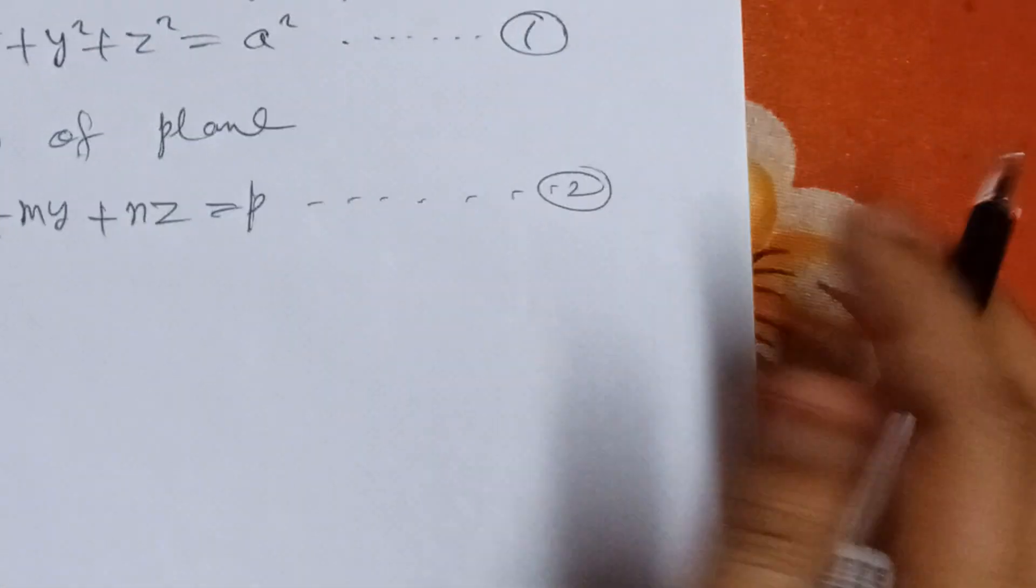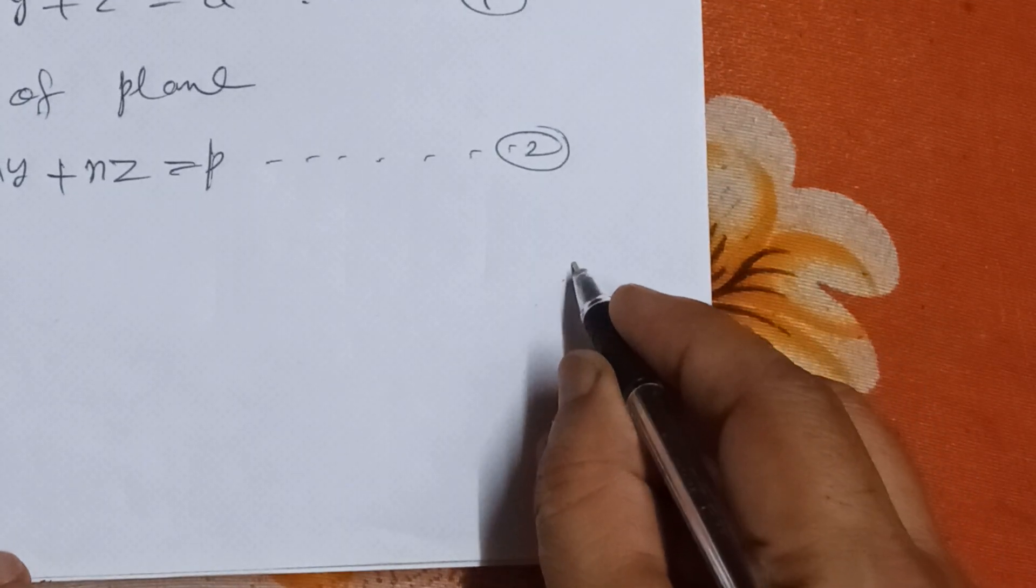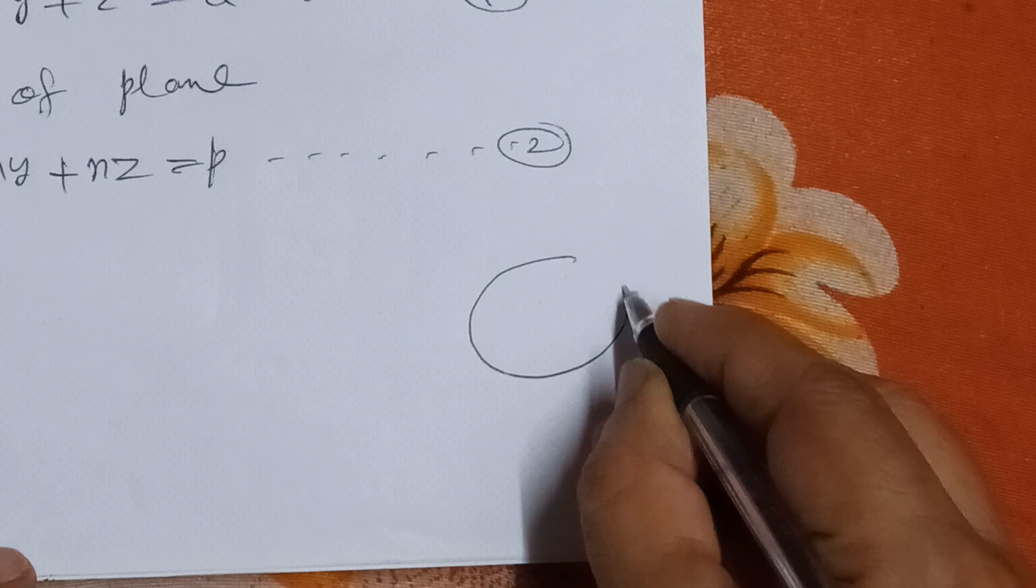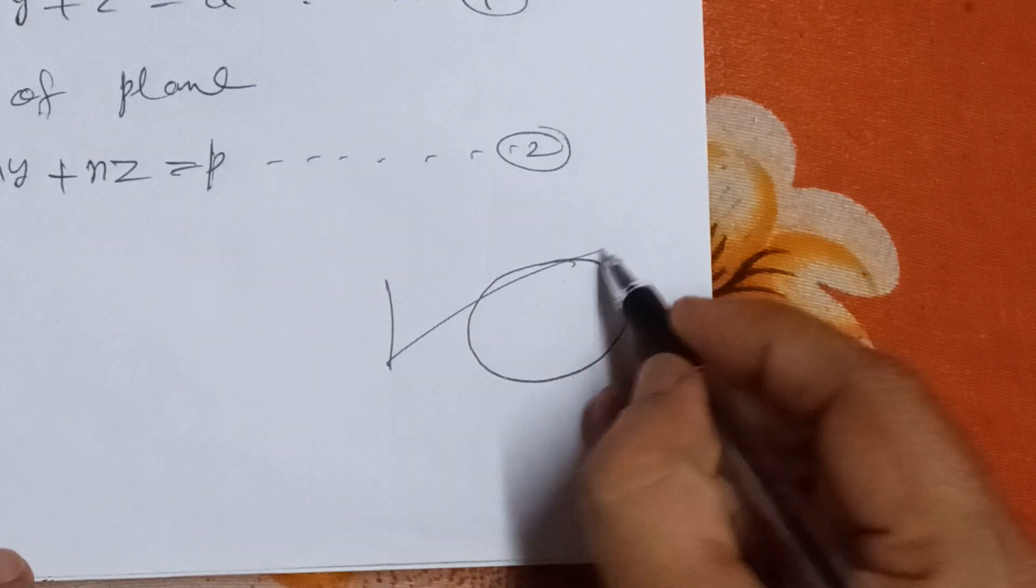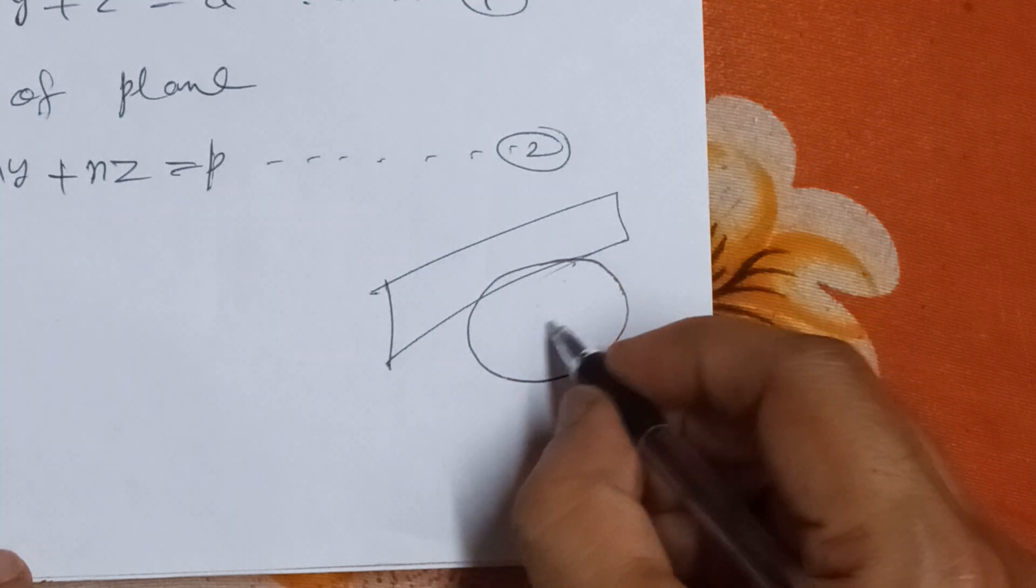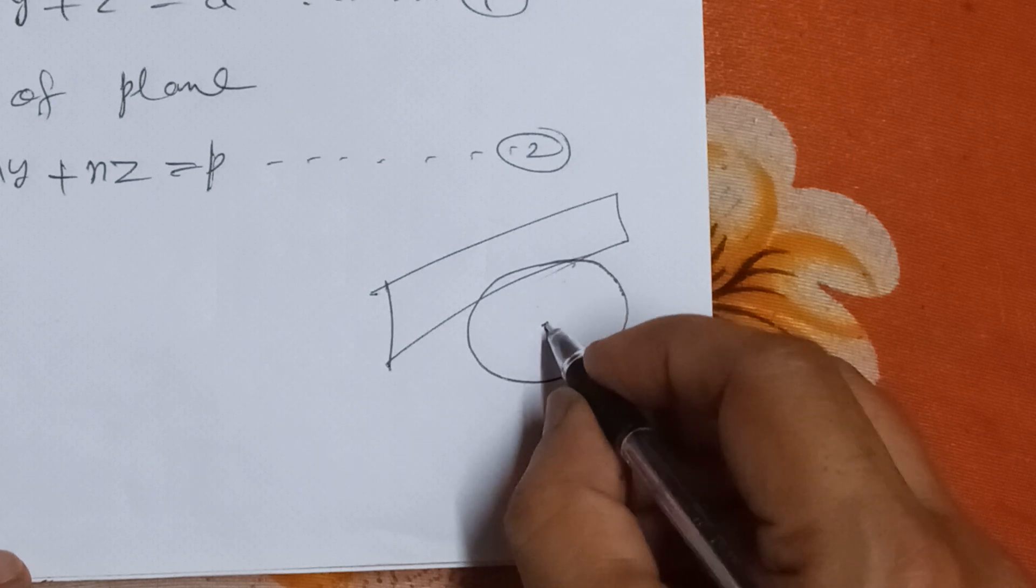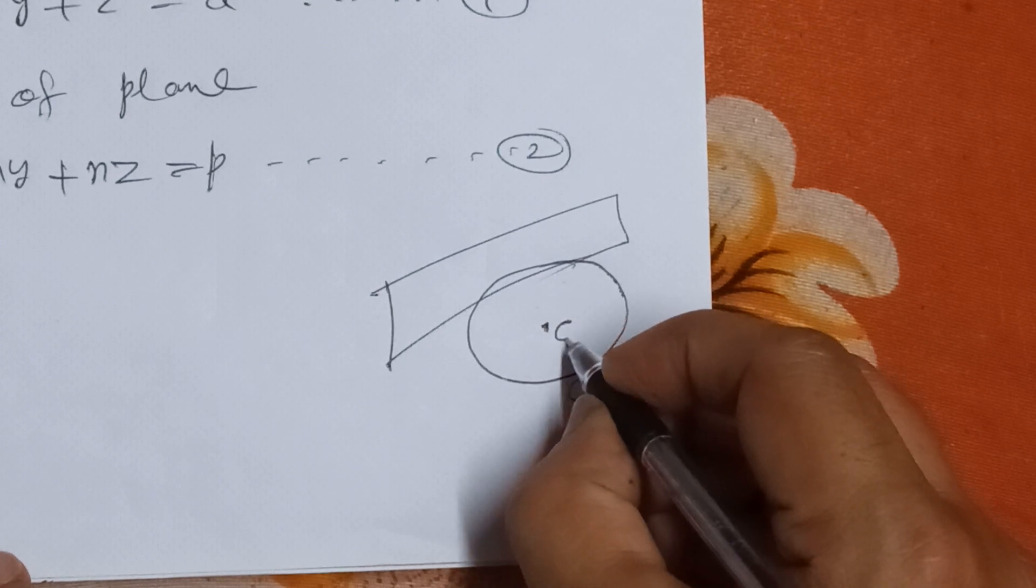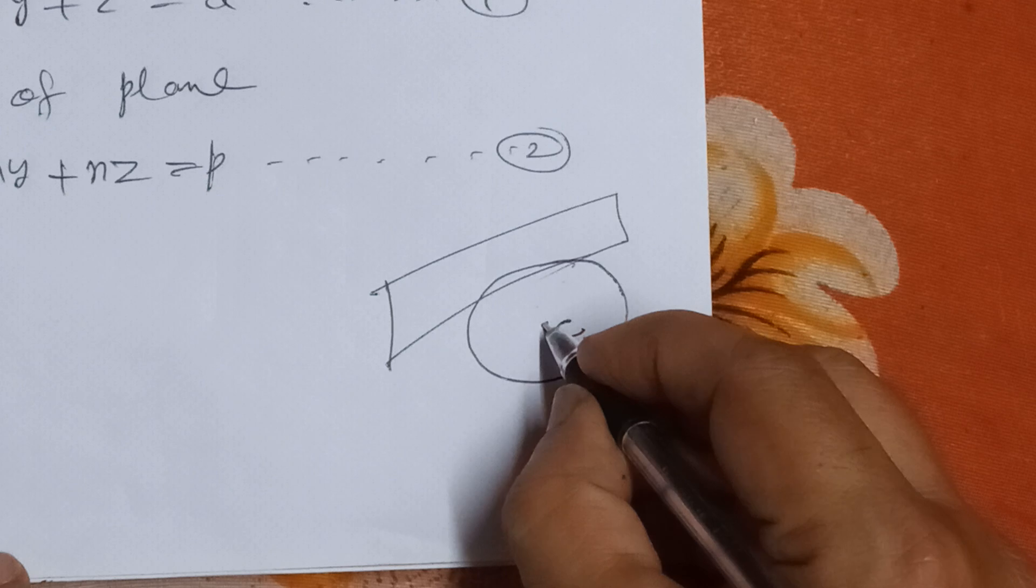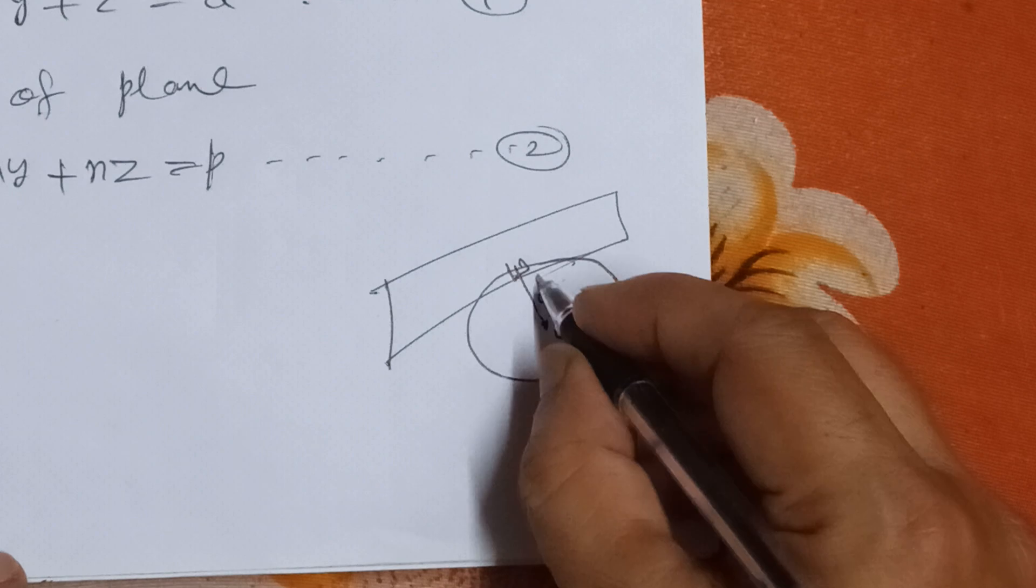I will find this condition by using the fact that if plane 2 touches sphere 1, then the perpendicular from center of sphere to plane will equal the radius of the sphere.